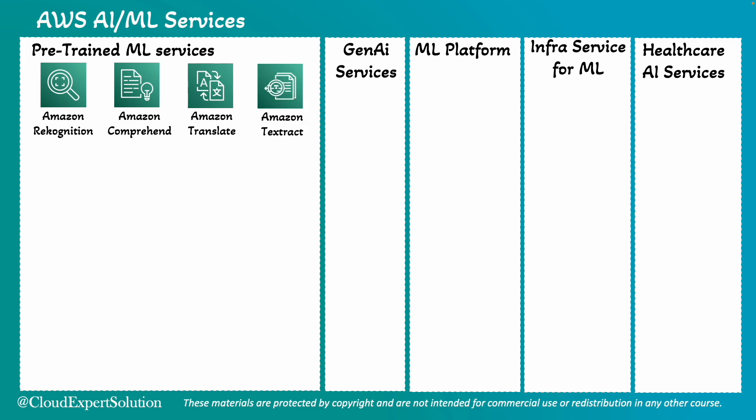Amazon Textract can extract text and data from scanned documents. For example, a healthcare provider can use Amazon Textract to digitize patient records and extract relevant information for analysis. Amazon Lex can be used to build conversational chatbots using voice and text.